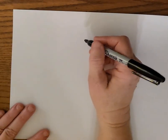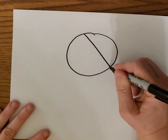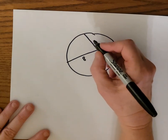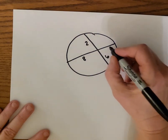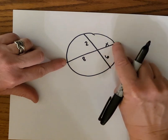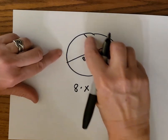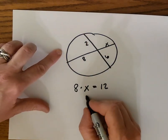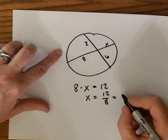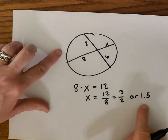We have a circle with two chords meeting inside — that's theorem 9-11. This part is 8 units, this is 6, this is 2, and we need to find x. When chords cross inside the circle, use the simple segments of each chord: 8 times x equals 6 times 2, which is 12. So x equals 12 divided by 8, which simplifies to 3/2 or 1.5.